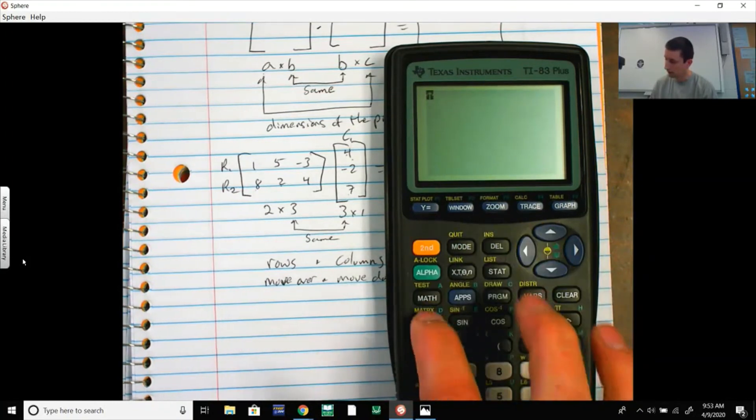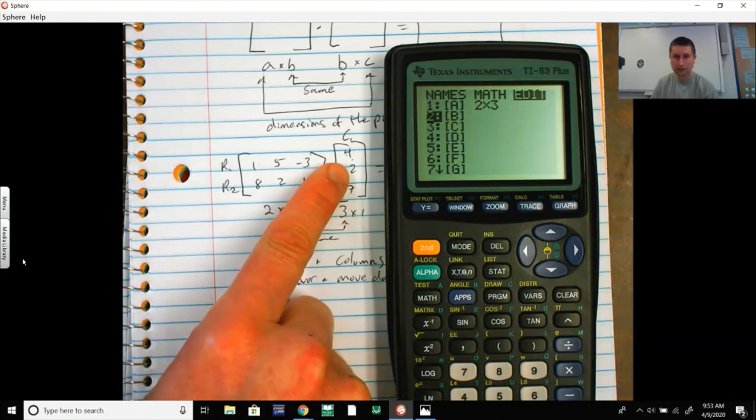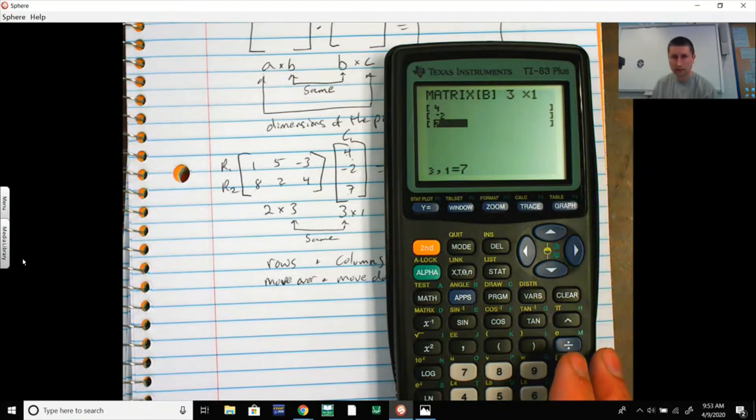Go back to Matrix and I need to edit a second matrix, Matrix B, and I need to put these values into Matrix B. That is a 3 by 1 matrix: 4 Enter, -2 Enter, 7 Enter. 4, -2, 7, so it should look like that.